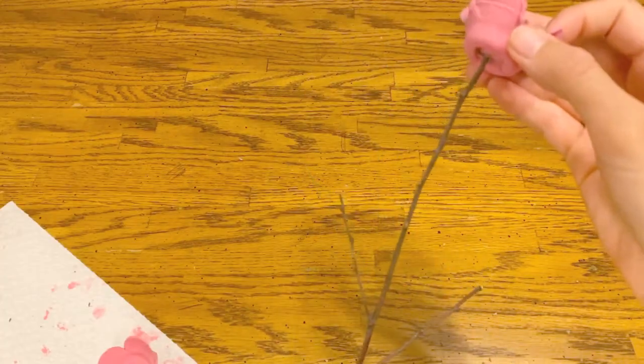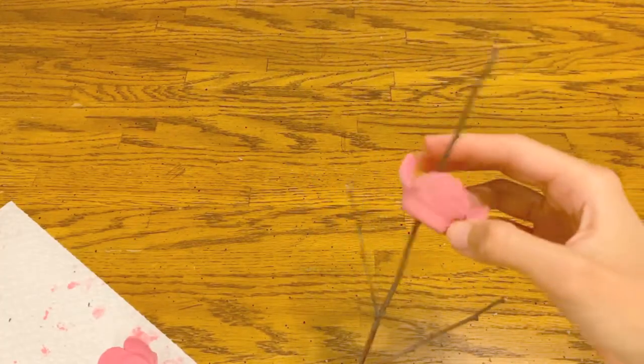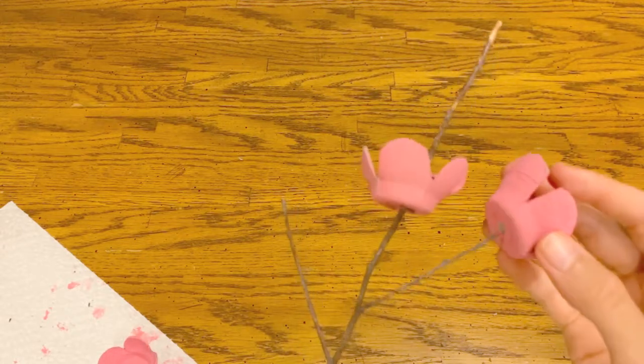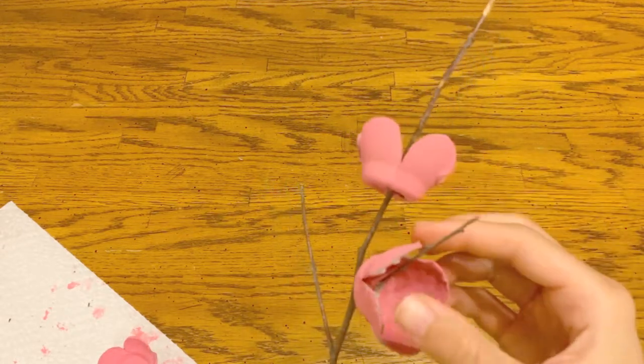I like how this stick has many different parts, so let's stick a blossom here and then stick another one on this small branch.